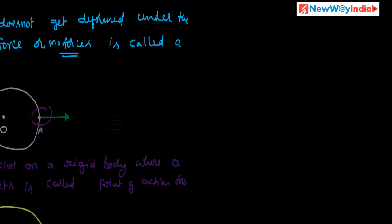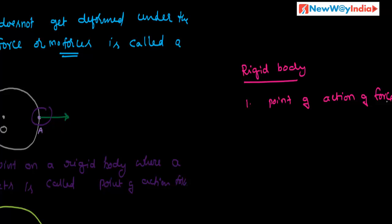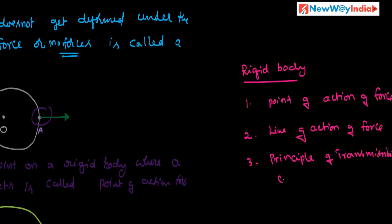These are the very important terms related to rigid body. The first one is point of action of force, the second one is line of action of force, and the third one is principle of transmissibility of force.